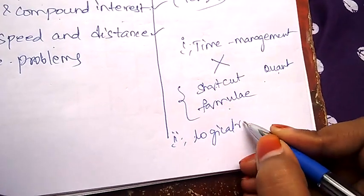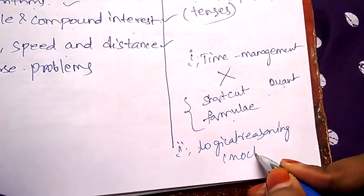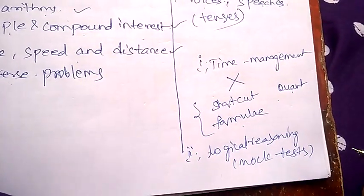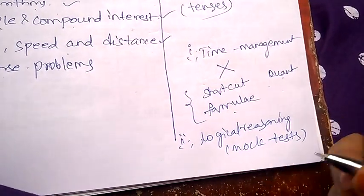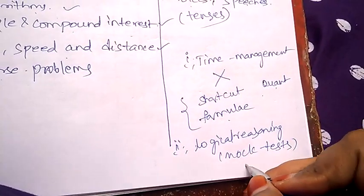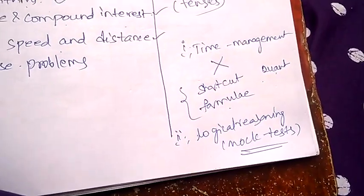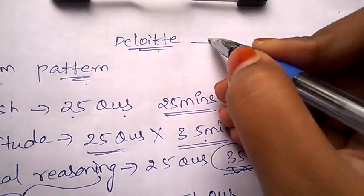The second tip is for logical reasoning - practice more and more mock tests. So that you will be practiced at reading more and more paragraphs, and the time which you take for solving questions will be reducing. Make sure you practice as many mock tests as possible.